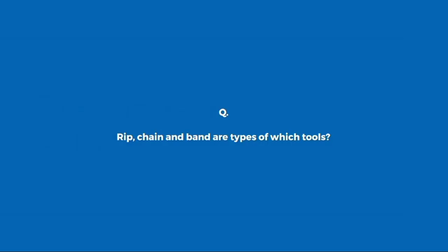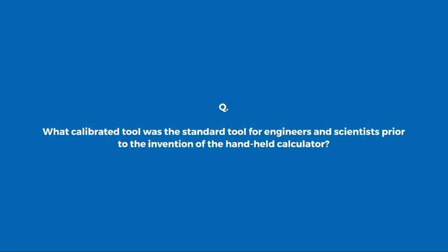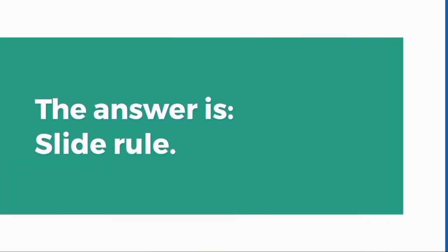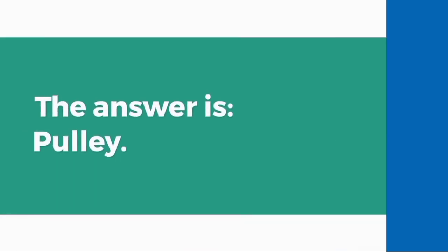Rip, chain and band are types of which tools? Saw. What calibrated tool was the standard tool for engineers and scientists prior to the invention of the handheld calculator? Slide rule. What P is sometimes referred to as block and tackle? Pulley.